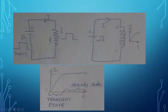Initially when current passes through the inductor it gradually increases, and after the energy is stored it comes to a steady state condition. This curve represents the current with respect to time for an inductor.